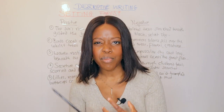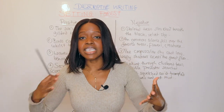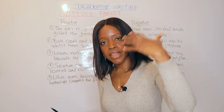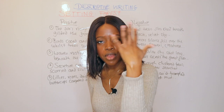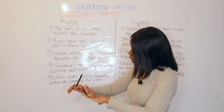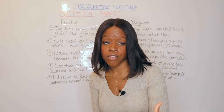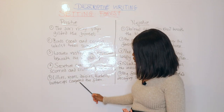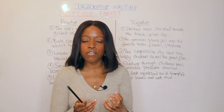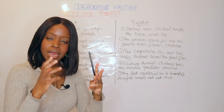The fourth phrase: 'Secretive creatures scurried and scuttled through' — there are really nice sibilant sounds here, but in this case it's not ominous, it's positive, creating a peaceful setting within the forest. The fifth and final positive phrase — you could use this in your setting, atmosphere, or central focus paragraph: 'Lilies, roses, daisies, bluebells, buttercups carpeted the floor.' This is a metaphor forming a carpet, using colorful listing to describe a beautiful, resplendent forest.